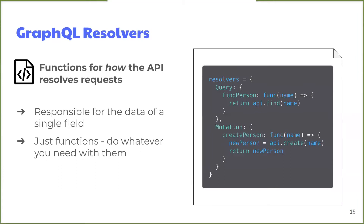While the schema defines what the API can do, resolvers are functions that tell the GraphQL server how to respond to requests. Unlike the schema, which has to strictly follow the API specification, the resolvers are flexible — they can be written however they need to to get the job done. They can also be changed depending on how the underlying database needs to be queried. The only requirement is that the resolvers have to return the data that the schema specifies should be returned. The query and mutation resolvers correspond to the query and mutation types that were defined in the schema.